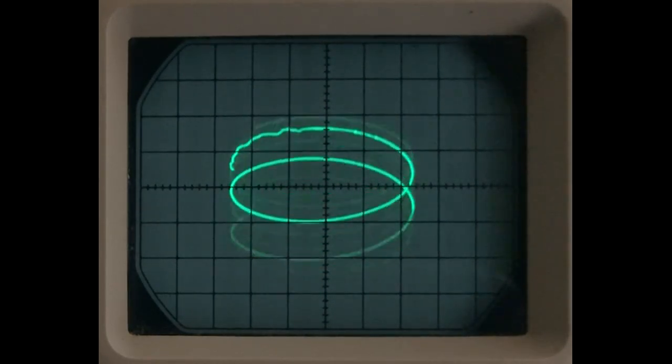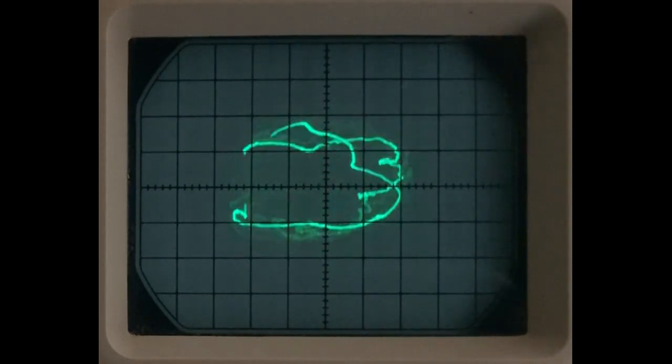Now we add a sawtooth waveform to the right channel. Our circle or ellipse turns into a spiral.